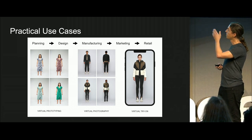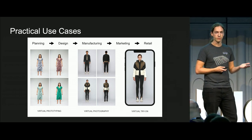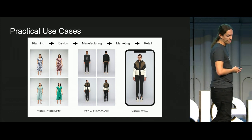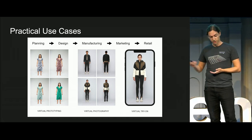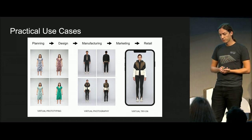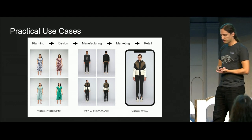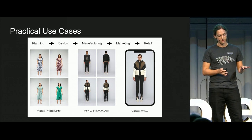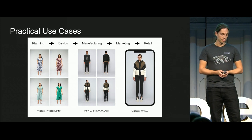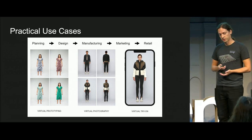For example, you can do virtual prototyping, where you can test the look of your garments before ordering fabrics and manufacturing any of them. You can do virtual photography, which is an area where you can combine model photos or 3D models with different garments and use that for product shootings or marketing without doing any real photo shoots. And of course, for retail, you can do virtual try-on in web shops, you can do omnichannel presence where you have a brick-and-mortar fashion store and put magic mirrors or iPads, and people can do a virtual try-on before ordering garments at the store.